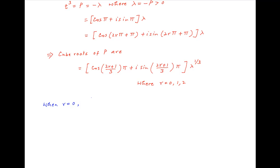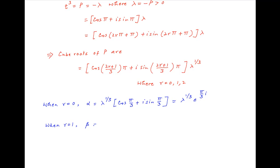Putting r = 0, we get the first cube root α, which is equal to λ^(1/3) · (cos(π/3) + i sin(π/3)), which can be written as λ^(1/3) · e^(iπ/3).